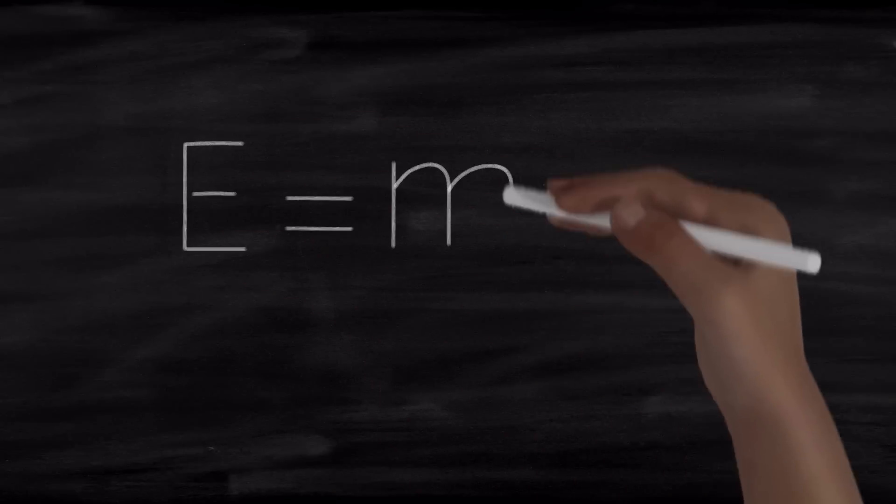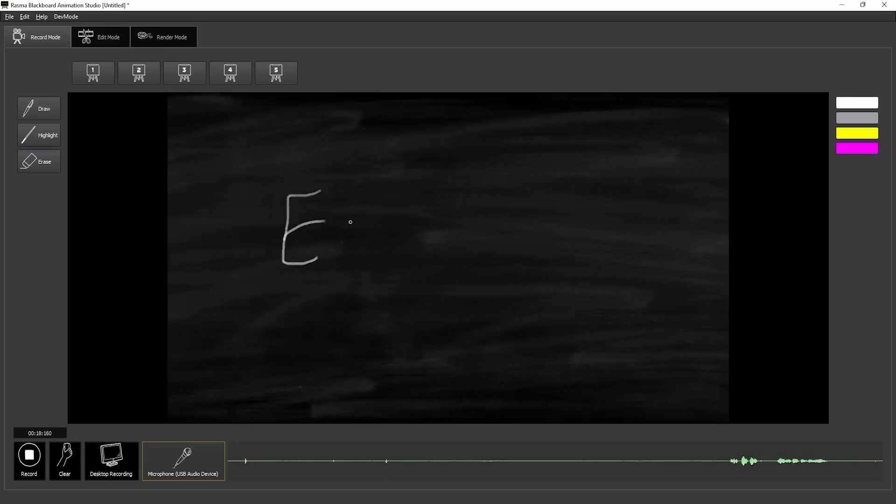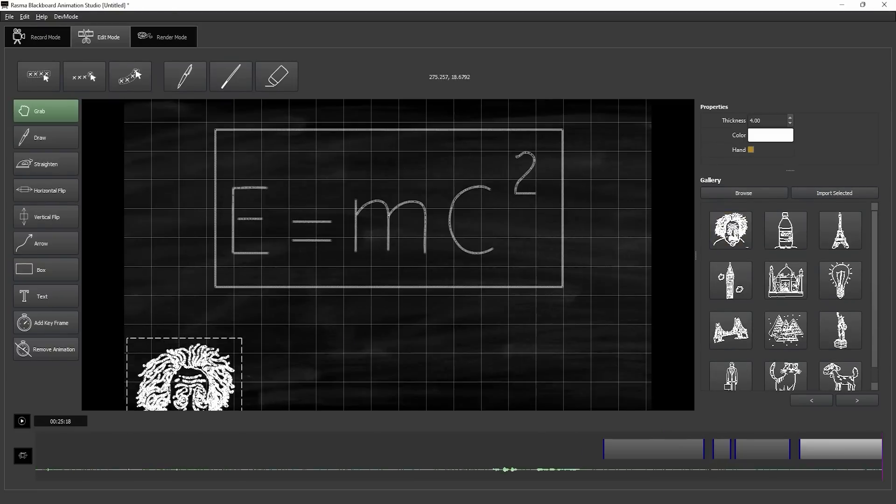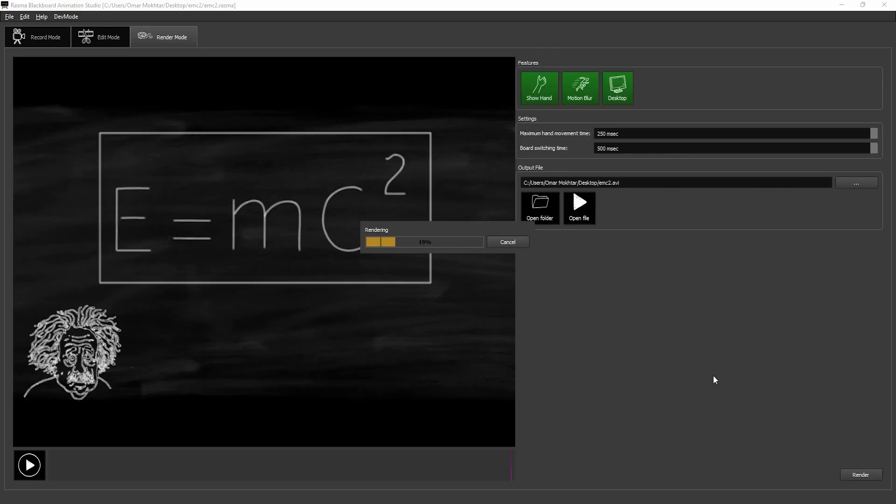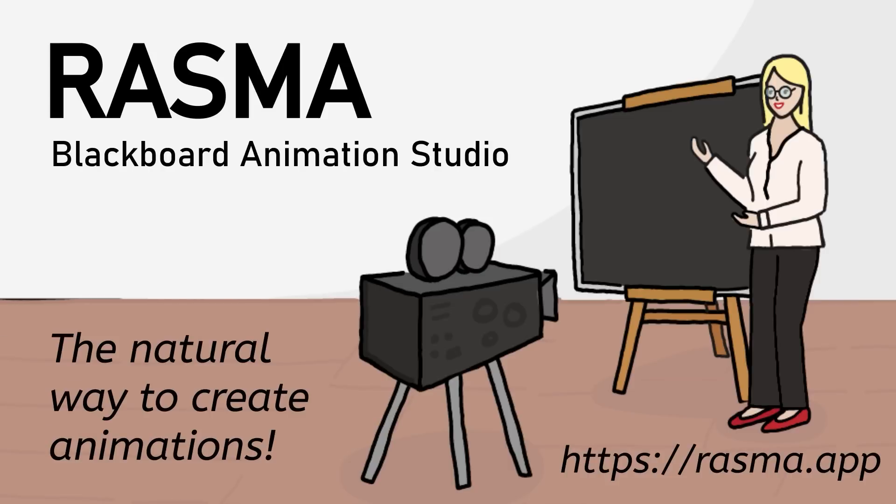Here's an efficient way to make educational blackboard videos. First, record your audio while explaining on the blackboard. Once you're done, you can perfect your animations in the edit mode. And finally, with a few clicks, your video is ready to be rendered. RASMA, the natural way to create animations.